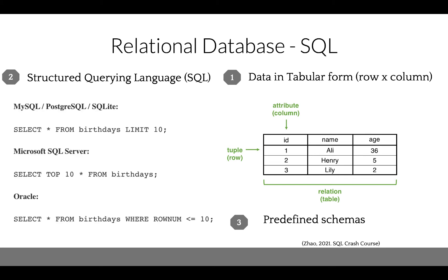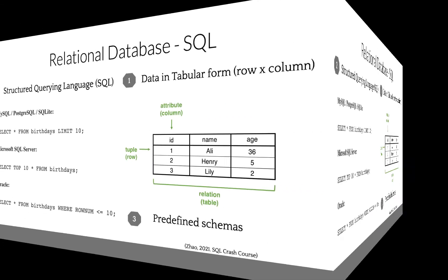Let's look at this example: how can you output 10 rows of data in five different RDBMSs? On the top we have MySQL, Postgres, and SQLite. Then we have Microsoft SQL Server and Oracle. SQL databases require a predefined schema, so you have to decide the structure of the table — what columns are integers, strings, or decimals, for example.